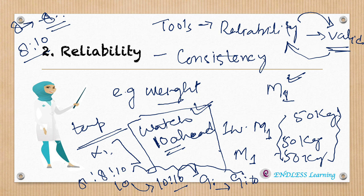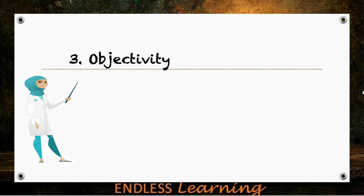So we can say that our tools or instruments must be reliable — they must be showing consistency in their results. The next characteristic is objectivity. A tool or instrument has objectivity when it is free from personal bias — there will be no personal bias.